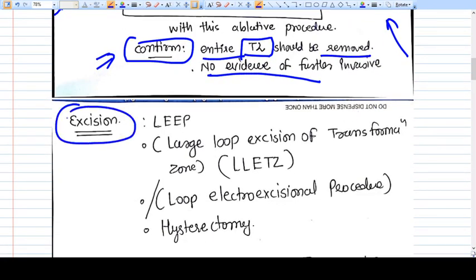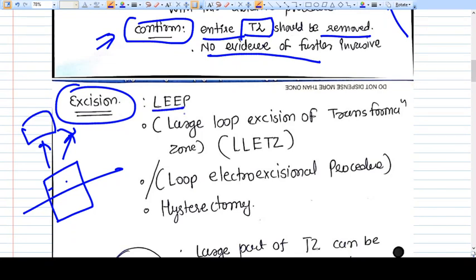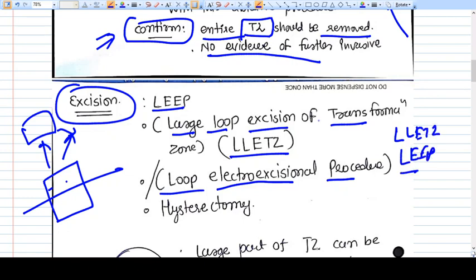Now comes the excision. In excision methods what we do is we just cut that tissue and take out the tissue and send for examination. The methods are LEEP - large loop excision of transformation zone, and LLETZ - loop electrosurgical excision procedure. You need to remember those full forms.